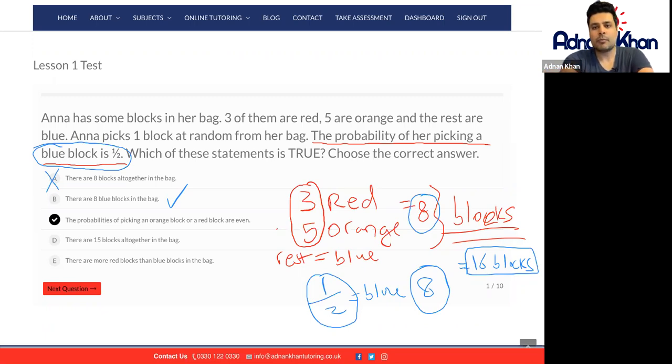C says the probabilities of picking an orange block or a red block are even. We know that's not true because there are three red blocks and there are five orange blocks altogether. So they're not quite even. So let's just put a cross against this one.